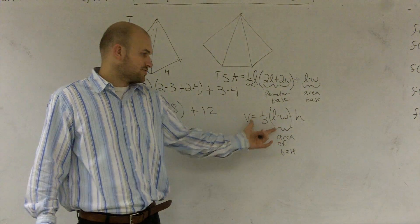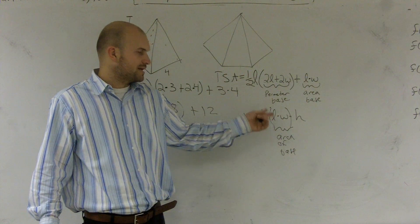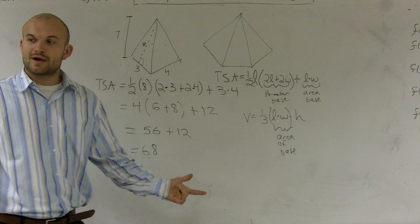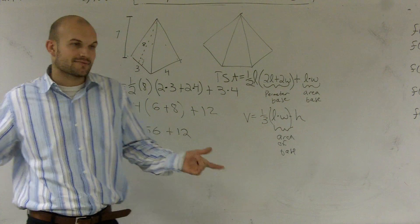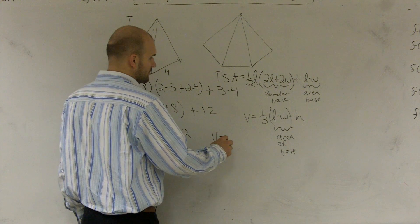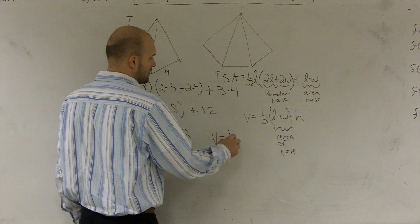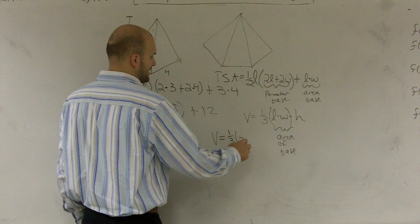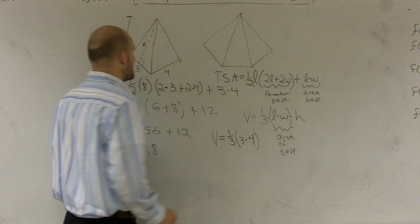Here, my area of my base, again, is a rectangle. So I'm just going to find the area of my base, which would be length times width. If it was a triangular base, it would be 1 half length times width. So here, I'm just going to do volume equals 1 third times 3 times 4 times my height.